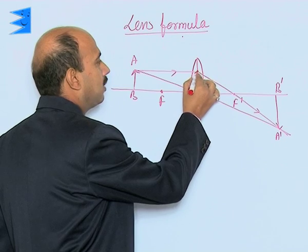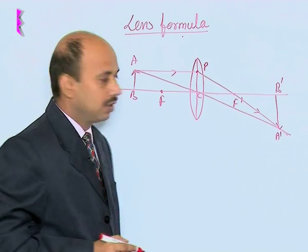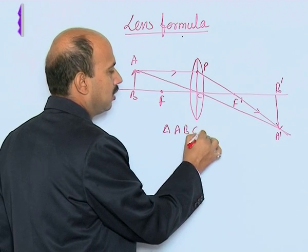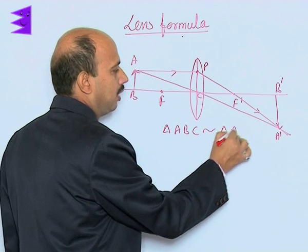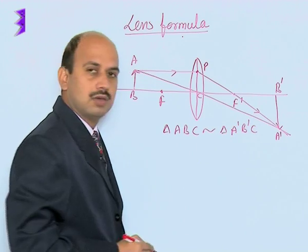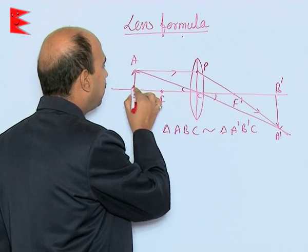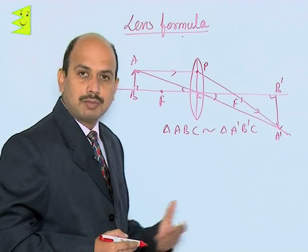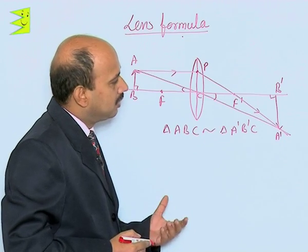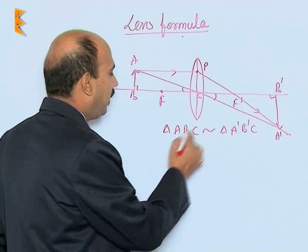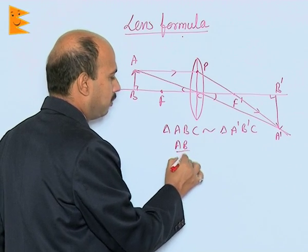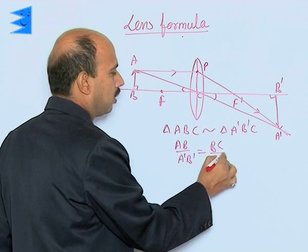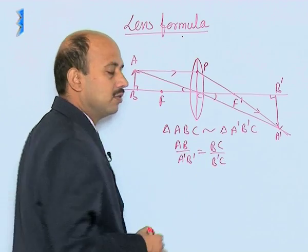If you take point P here, first we can take triangle ABC similar to triangle A'B'C. Here these two are vertically opposite angles and these are 90-degree angles. So obviously, by that property these two triangles are similar. If the triangles are similar, their sides are in ratio. Then we can write: AB / A'B' = BC / B'C. This is the first equation.